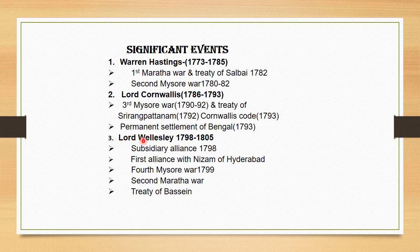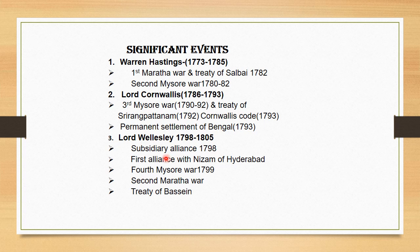Next is Lord Wellesley, 1798 to 1805. The most important thing in his time was the Subsidiary Alliance — one of the most important British policies for expansion in India. The first alliance under the Subsidiary Alliance was with the Nizam of Hyderabad and the British East India Company in 1798. Under this, Indian kings maintained their armies but revenue and rights went to the British East India Company, making the existence of these kingdoms very difficult.